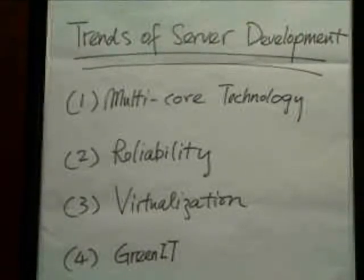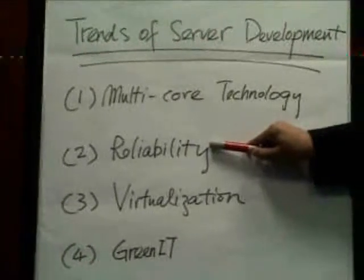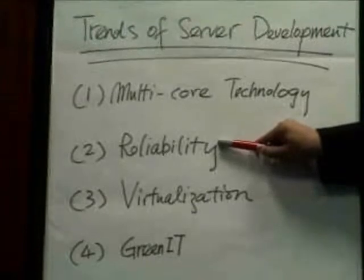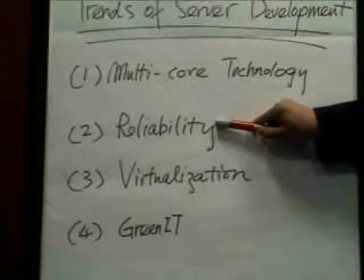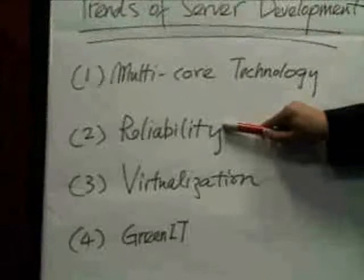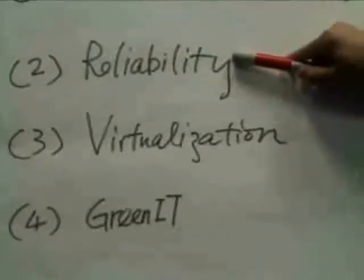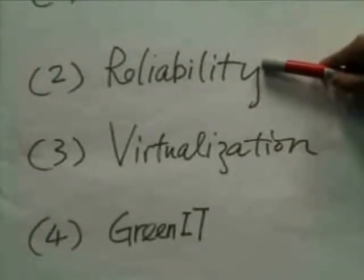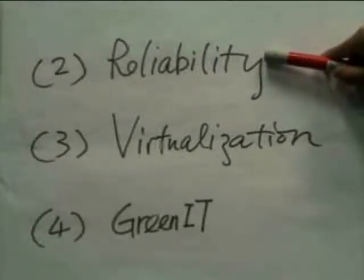With the enhancement of semiconductor technologies, more and more calculation cores can be put into a single IC chip. For the Spark processor, Fujitsu is developing a new 8-core Spark 64 CPU with 45nm technology. From our point of view, we notice there are three other areas of server development. Reliability is actually the cornerstone of all types of server, and we can see that server reliability is being improved by new technologies such as error detecting and correcting features and advanced cooling systems.